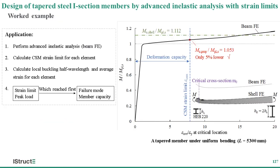The application of the proposed design method involves four steps: perform advanced elastic analysis; calculate CSM strain limit for each beam element; calculate local buckling half-wavelength and average strain for each beam element; and find the load increment during GMNIA at which the average strain at any cross-section attains the corresponding CSM strain limit, and also find the load increment at which the peak load factor is reached. Whichever occurs first defines the failure mode and the ultimate member capacity.